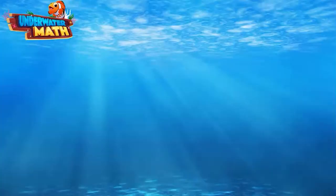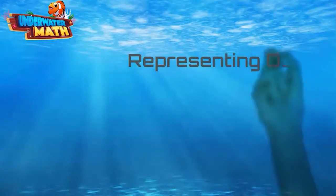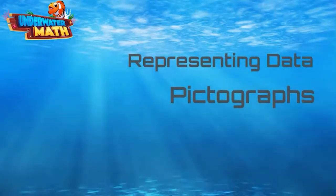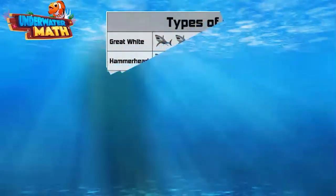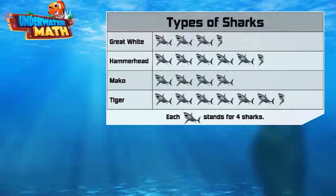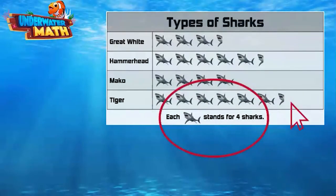Welcome back to Underwater Math. Today we're going to review representing data with pictographs. A pictograph is a graph made up of pictures. Each picture can represent one or more items. In this graph, each shark picture represents four sharks.